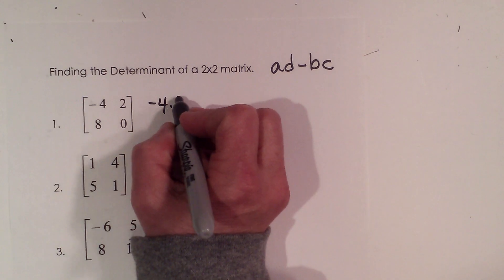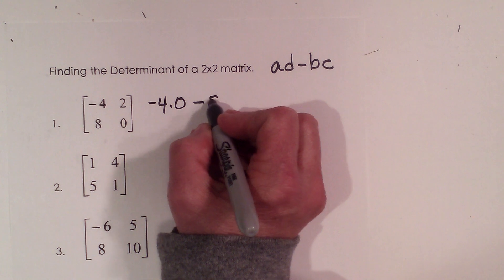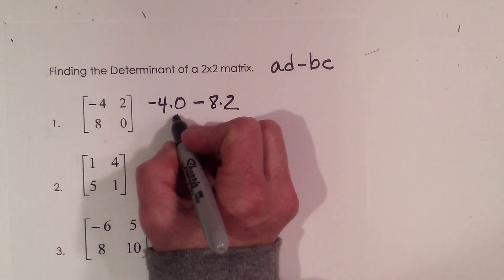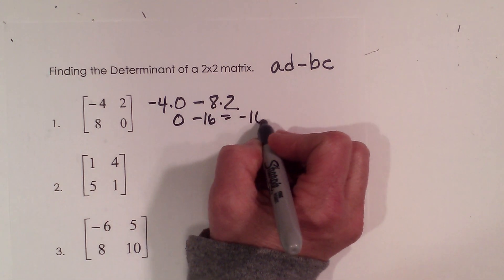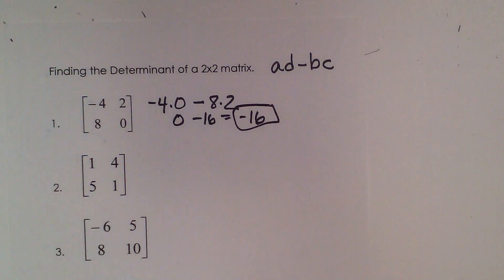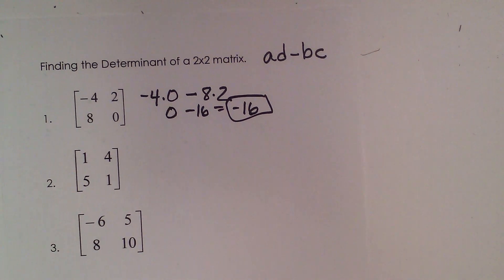So negative 4 times 0 minus 8 times 2. So I have 0 minus 16 which is negative 16. And that is the value of the determinant of this 2x2.